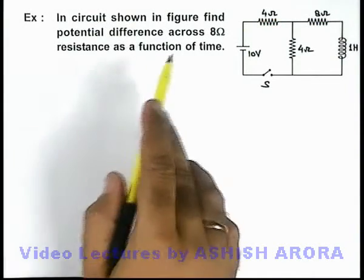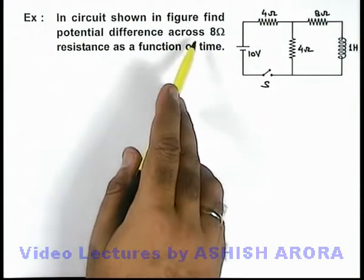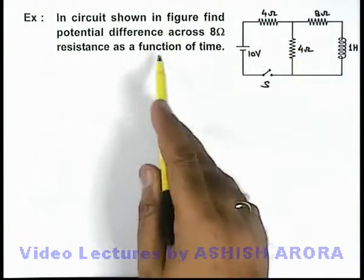In this example, in the circuit shown in the figure we are required to find the potential difference across 8 ohm resistance as a function of time.